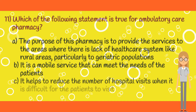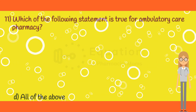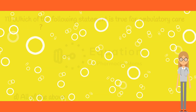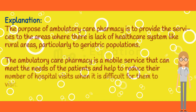Question 11. Which of the following statement is true for ambulatory care pharmacy? Option A: The purpose of this pharmacy is to provide the services to the areas where there is lack of healthcare system, like rural areas, particularly to geriatric populations. Option B: It is a mobile service that can meet the needs of the patients. Option C: It helps to reduce the number of hospital visits when it is difficult for the patients to visit. Option D: All of the above options. The correct answer is option D. The purpose of ambulatory care pharmacy is to provide the services to the areas where there is lack of healthcare system, like rural areas, particularly to geriatric populations. The ambulatory care pharmacy is a mobile service that can meet the needs of the patients and help to reduce their number of hospital visits when it is difficult for them to visit.